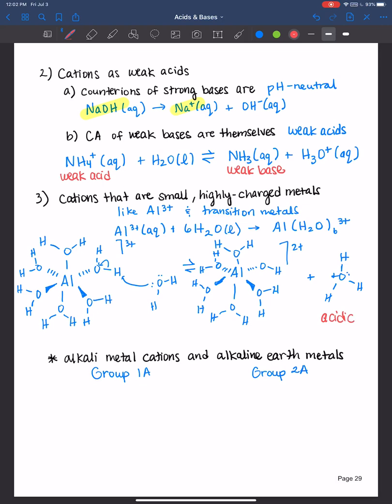You would see an acidic solution. So in summary, cations that are small and highly charged metals will form slightly acidic solutions due to the fact that water can be ionized by this process here to form hydronium ions. Alkaline metal cations and alkaline earth metals do not ionize water in this way. And therefore, that's why they are pH neutral.